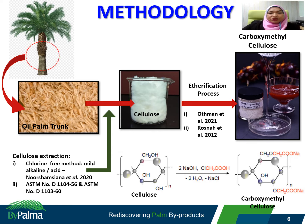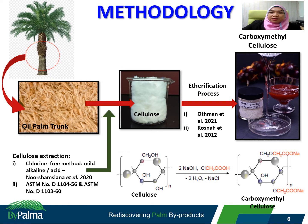This slide shows the steps involved in the production of CMC from OPT. Physical pre-treatment was conducted prior to cellulose extraction. Chip OPT of about 6 inches was subjected to a snipper press to reduce the size to approximately 10 cm fiber, followed by a drying process. The OPT fiber was then subjected to a hammer mill, producing a final product ranging from 3 mm to 6 mm with a moisture content of less than 10%.